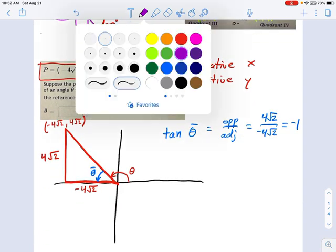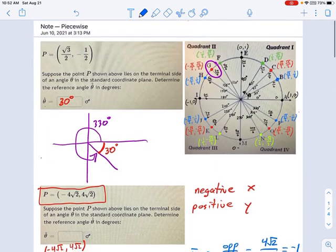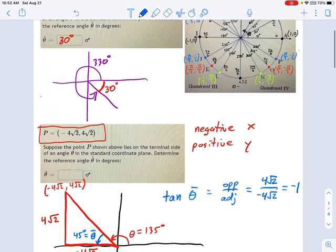So that just told us that theta equals 135 degrees. And this blue angle, reference angle, you can see that's going to have to be 45 degrees. It's the difference between 180 and 135. So that's the steps you go through to solve this one.